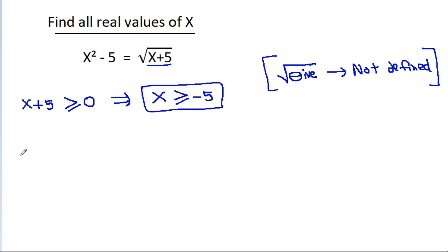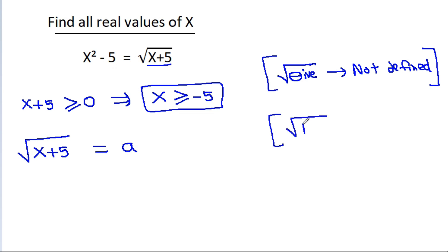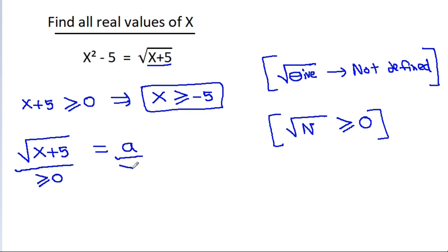Now suppose the square root of x plus 5 is equal to a. Then the square root of any number n should be greater than or equal to 0, so a should be greater than or equal to 0.